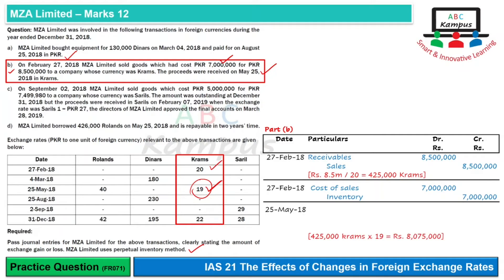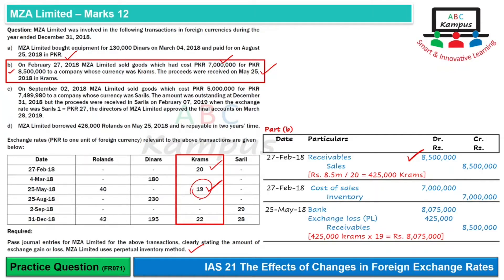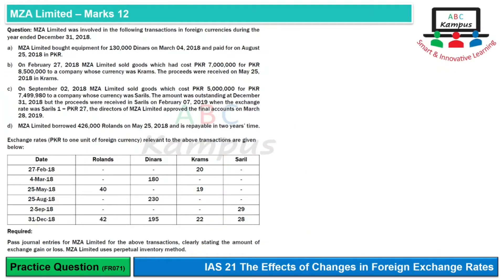On May 25th, 425,000 Crams at a rate of 19 gives us 8.075 million in PKR. Bank is debited. The receivable already recorded was 8.5 million, which we de-recognize. The difference of 425,000 is recorded as an exchange loss, because we received less than the receivable value.